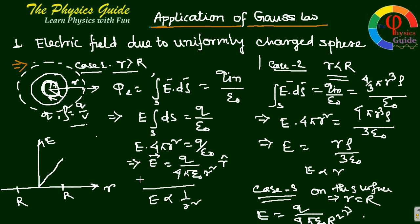After that, E equals Q by 4πε₀R², then E proportional to 1/r², so it's decreasing. There should be symmetry in this case.